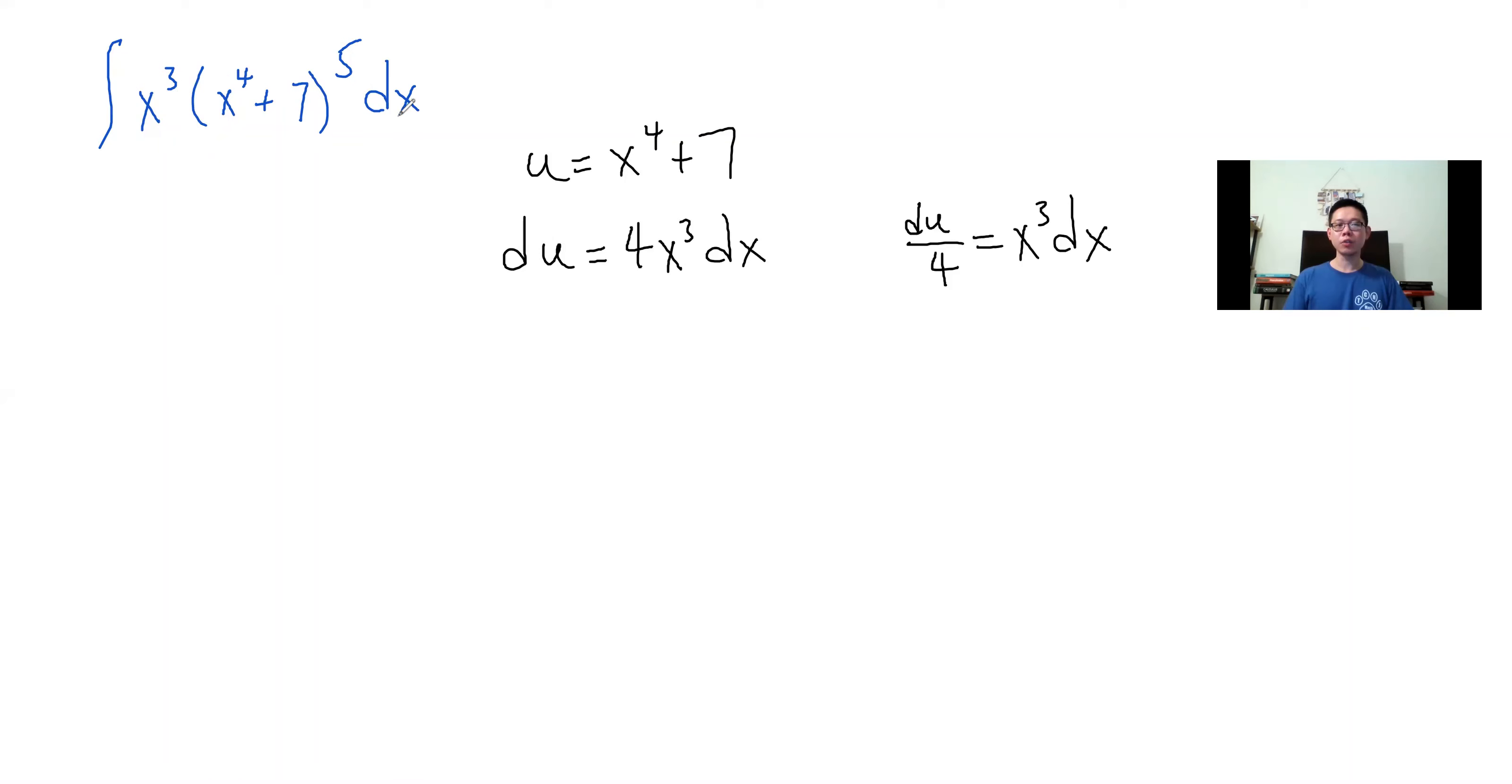That way, x cubed dx will be replaced by du over 4, and x to the fourth plus 7 will be replaced by u.